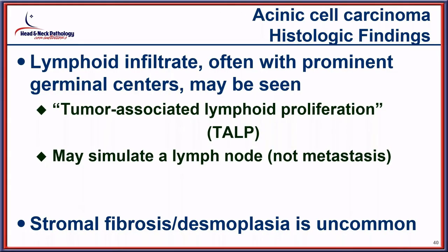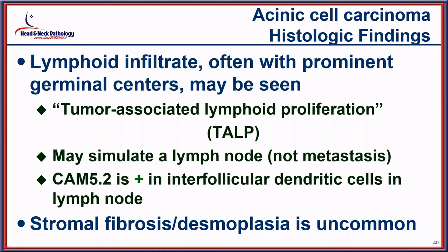A common finding is the tumor-associated lymphoid proliferation (TALP), which can be remarkably prominent. When present, it suggests a better overall outcome due to good host immune response. It may simulate a lymph node — critical especially on frozen section — so do not misinterpret it as metastatic disease requiring neck dissection. On permanent material, CAM 5.2 highlights interfollicular dendritic cells, confirming a true lymph node versus TALP. A desmoplastic stroma is an uncommon finding.